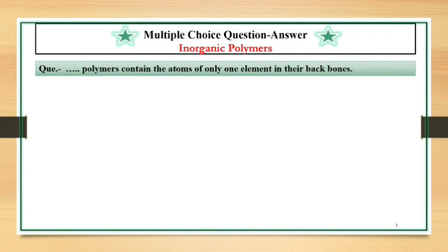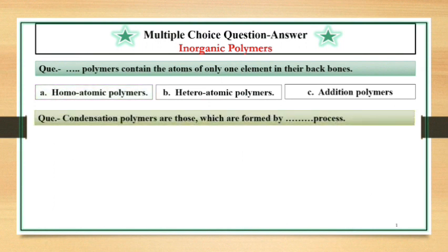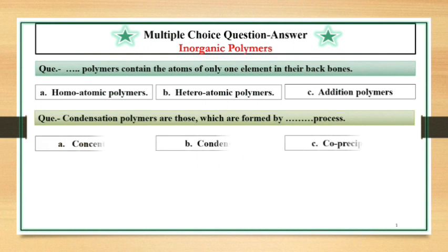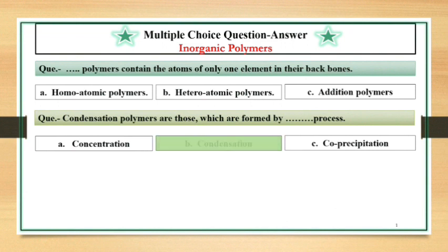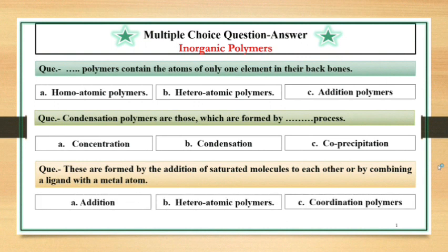Dash dash polymers contain the atoms of only one element in their backbones. Answer is Homoatomic Polymers. Condensation polymers are those which are formed by dash dash process. Answer is Condensation. These are formed by the addition of saturated molecules to each other or by combining a ligand with a metal atom. Co-ordination polymers.